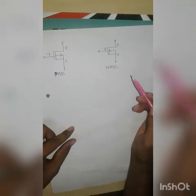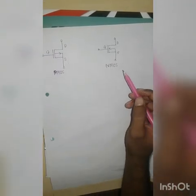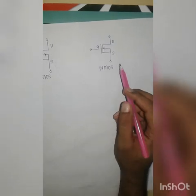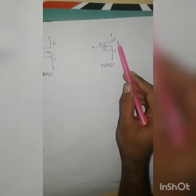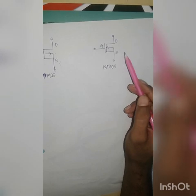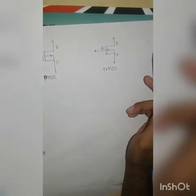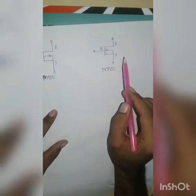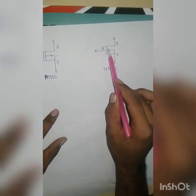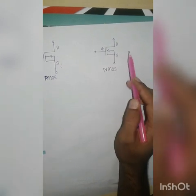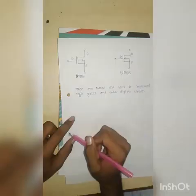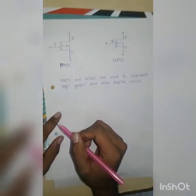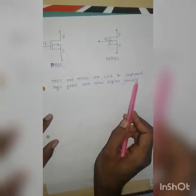Here is the NMOS symbol. Like PMOS, this is the drain terminal, this is the gate terminal, and this is the source terminal. The difference between PMOS and NMOS is the arrow direction — the arrow is inward in NMOS.